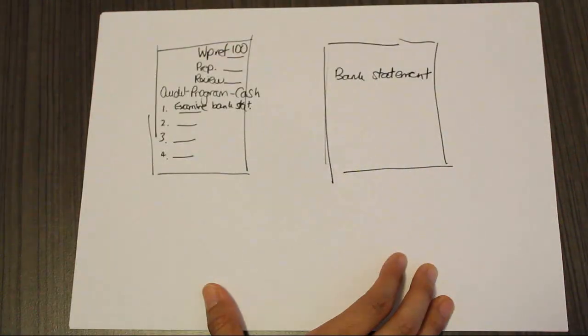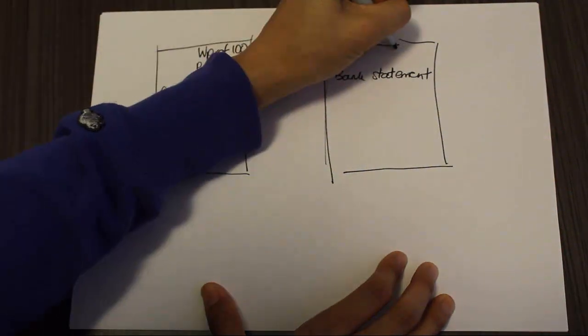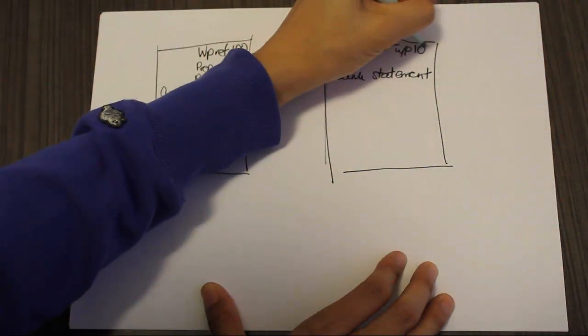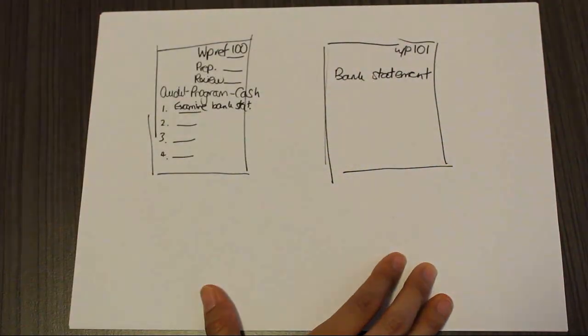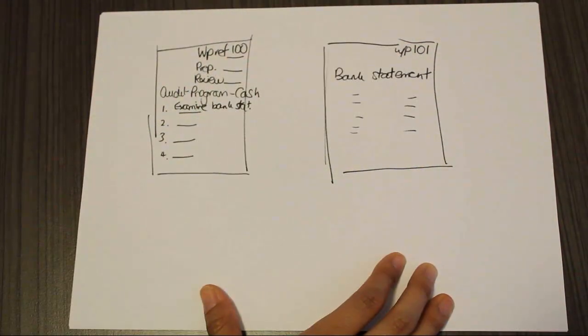Now, what you'll notice is that it has no work paper reference number. So what I'll do is I'll give it one. I've just used 101 there to keep it sequential. There's a whole lot of information on the bank statement that we might care to look at.